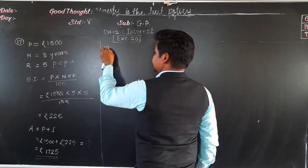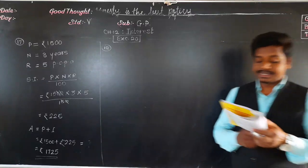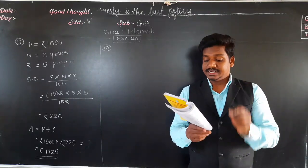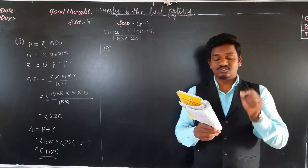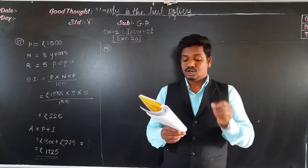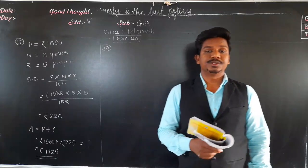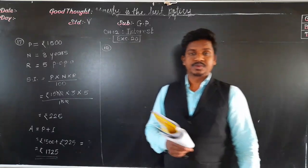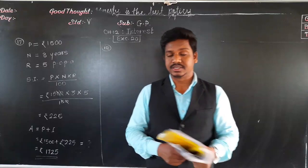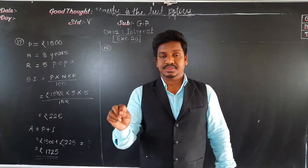Next, example number 18. The simple interest for one year at a certain rate on rupees 400 is rupees 22. Read the sentence carefully and find out what is given.